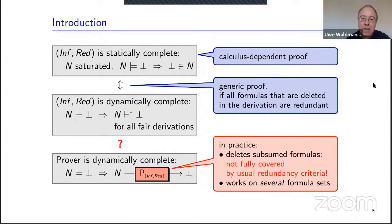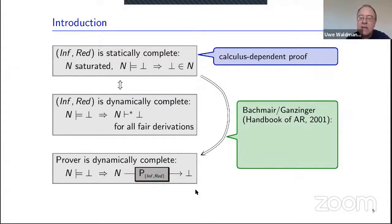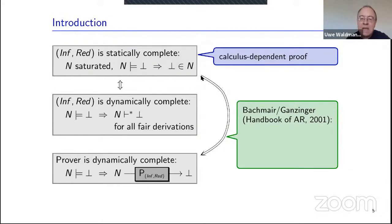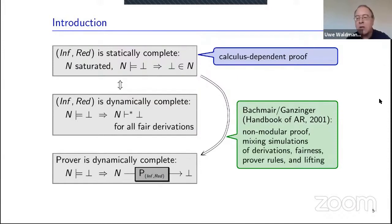There is one publication that proves a particular prover implementing a particular calculus is dynamically complete: the Handbook of Automated Reasoning by Bachmeier and Gensinger. The problem is they essentially omit the middle step, starting with a static completeness proof for the ground case and then considering simulations of derivations at both the ground and non-ground levels. The proof is very non-modular — it mixes simulations, fairness, prover rules, and lifting all simultaneously.